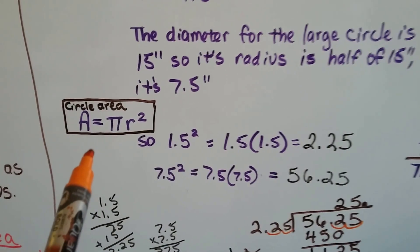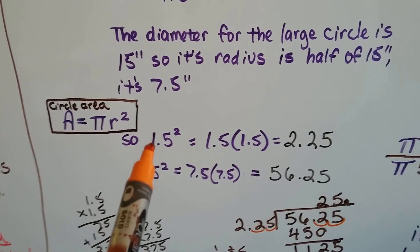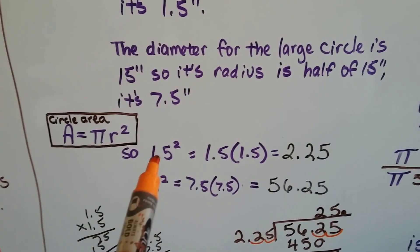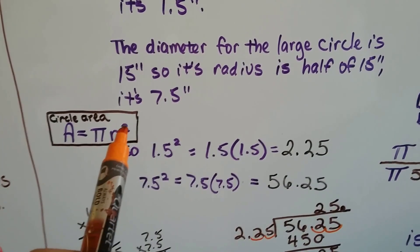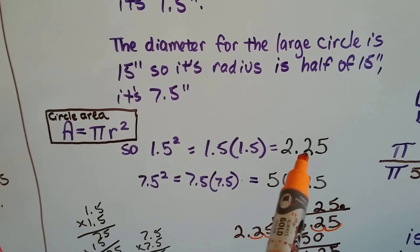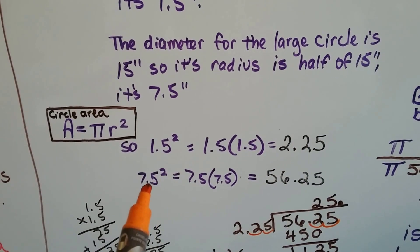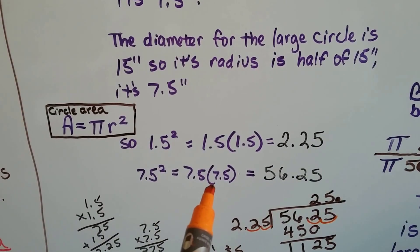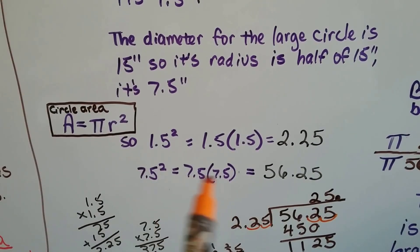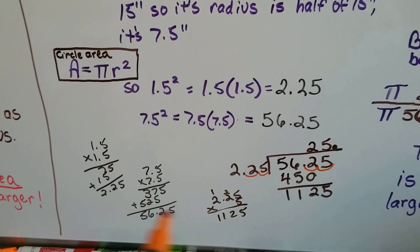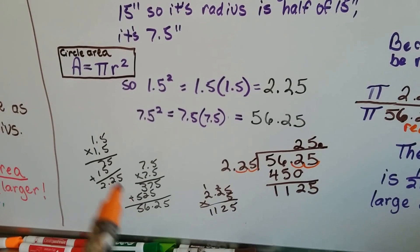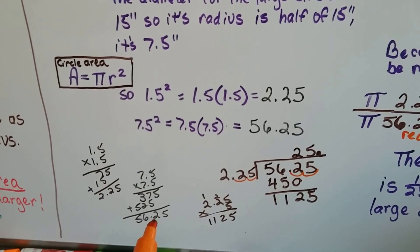So here's the circle area formula. We know 1.5 is the radius for the small one, and we do 1.5 times 1.5 for the radius squared. That's 2.25. Now we do 7.5 times 7.5 for the radius of the large one, and that comes out as 56.25. See? 2.25 and 56.25.